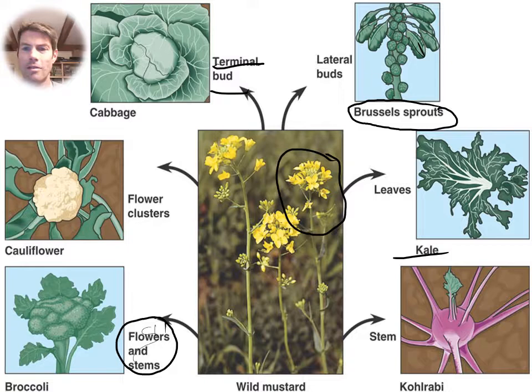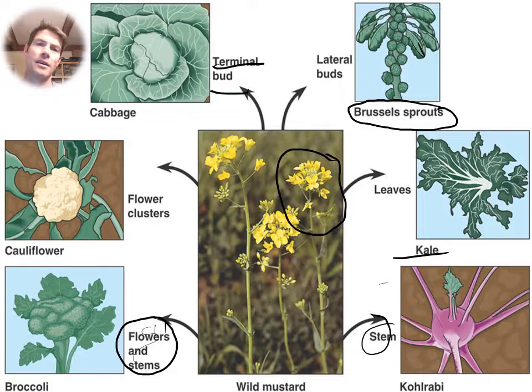Kohlrabi, which we don't really look at too much, but focusing on the stem. So just like we see with dogs and other animals when we domesticate them, we can get all these amazing plants - all these varieties - from a single original one.